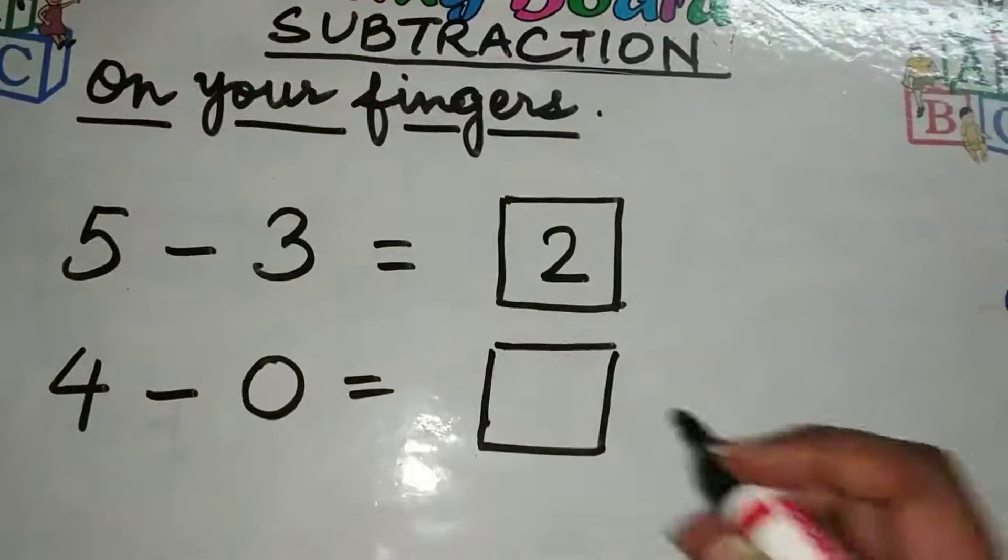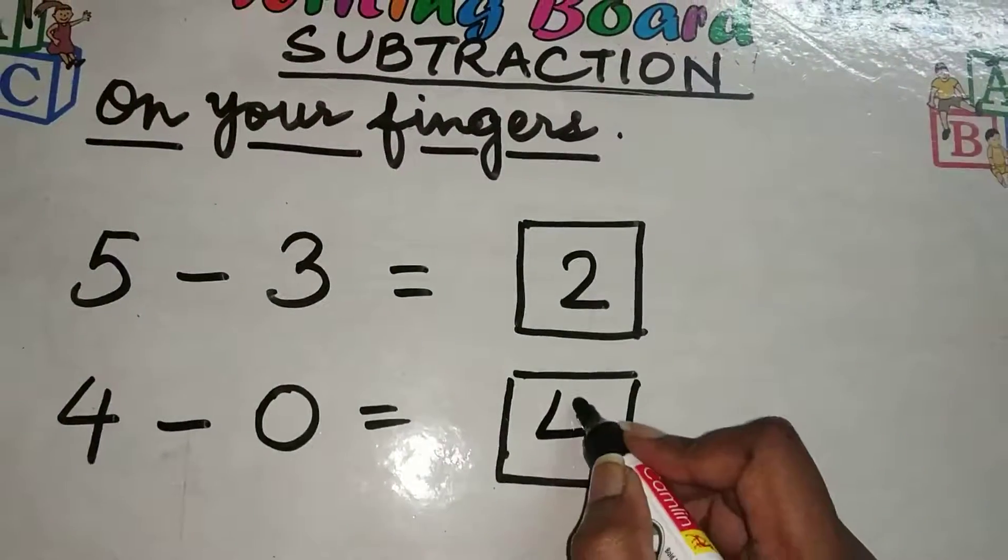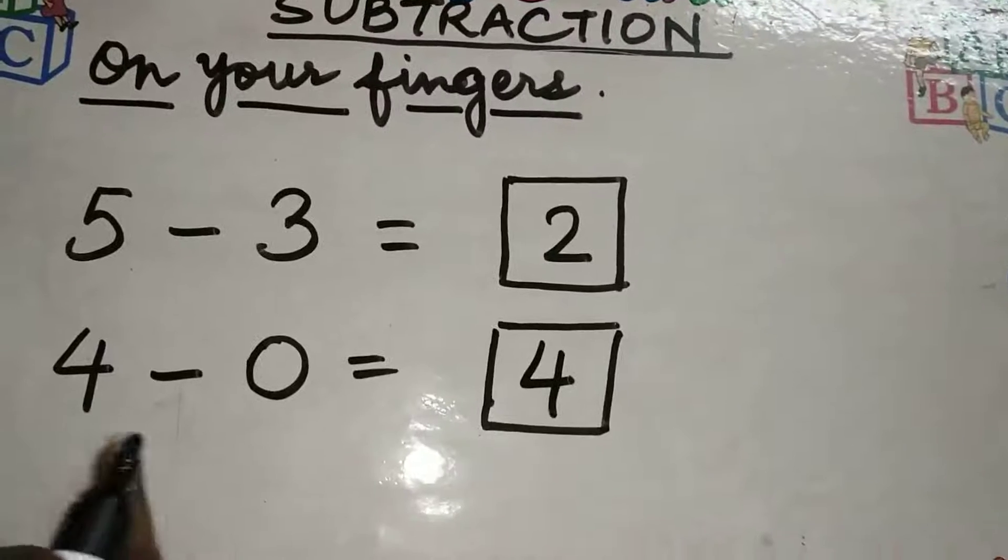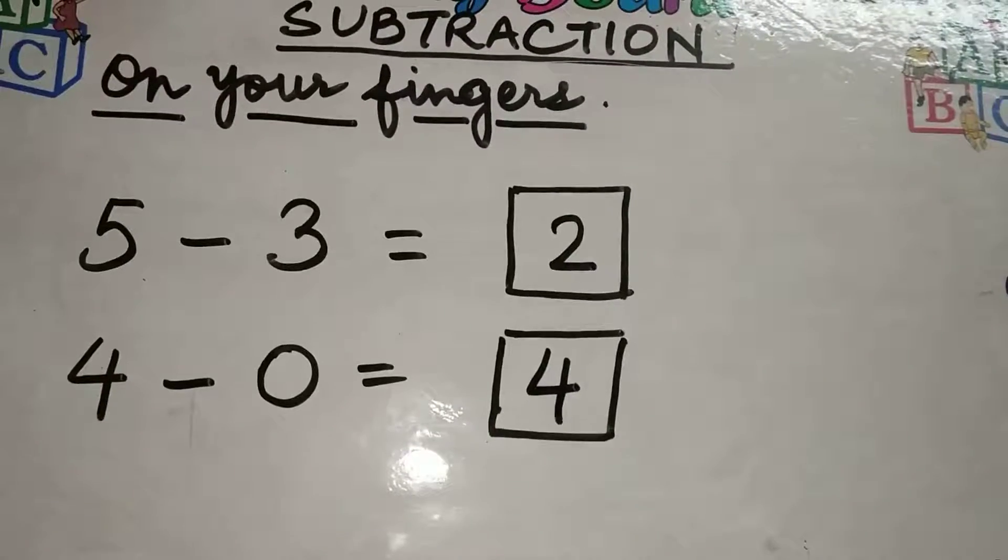So, what is our answer? Four. So, four minus zero is four.